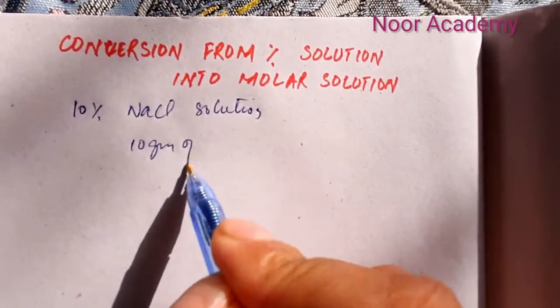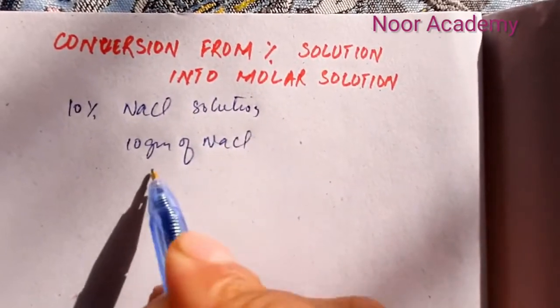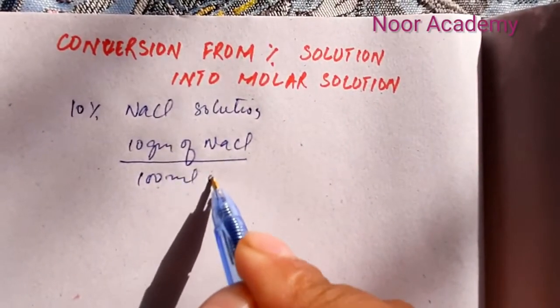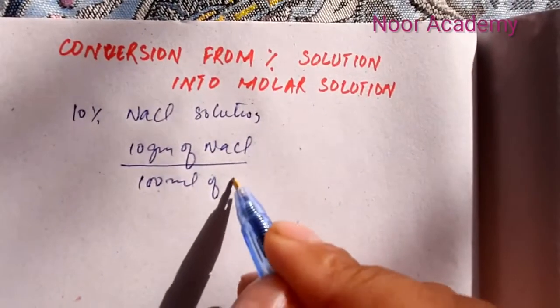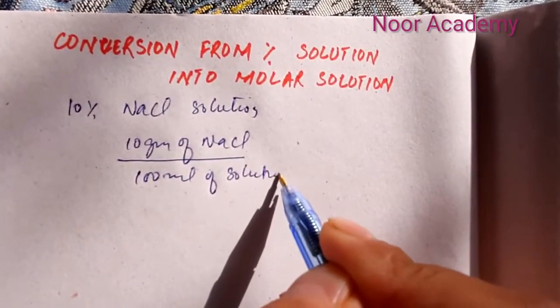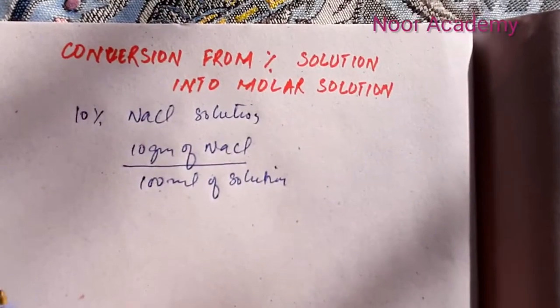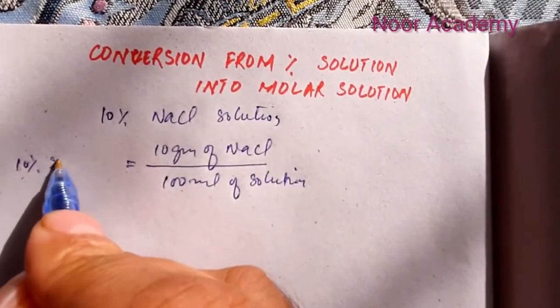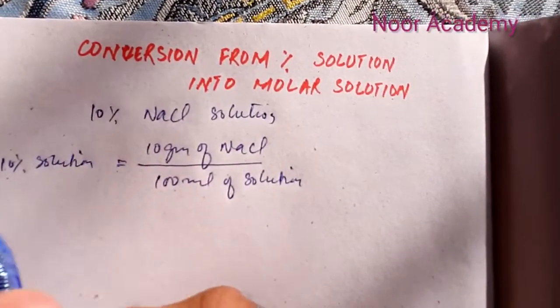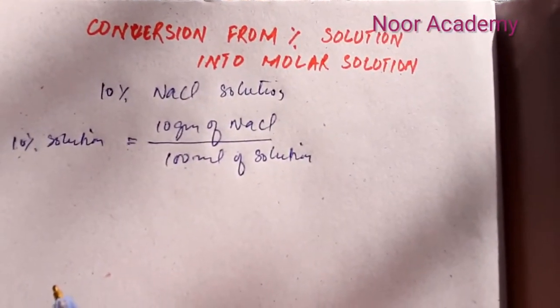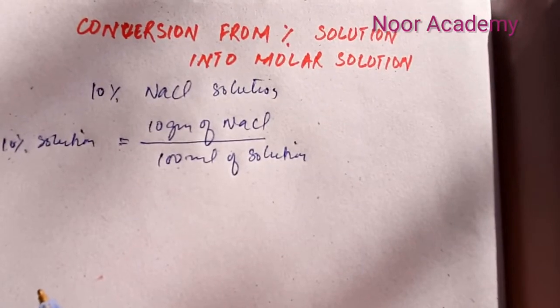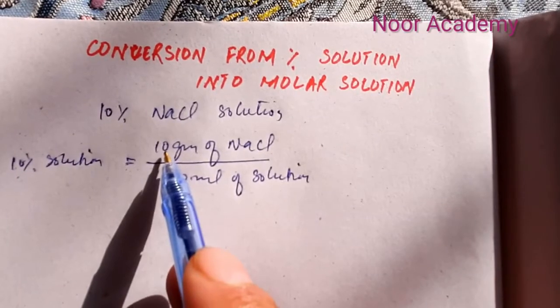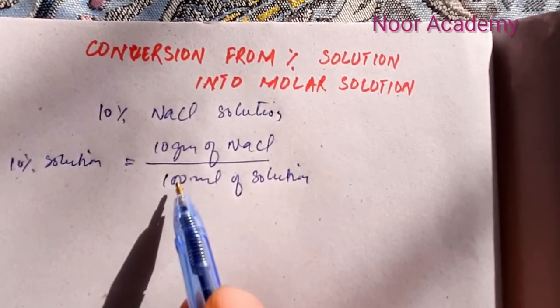Over 100 ml of solution. This is actually equal to 10% solution of NaCl. In order to convert this into a molar solution, what we need to do is multiply the numerator and denominator by 10.